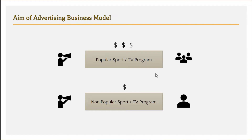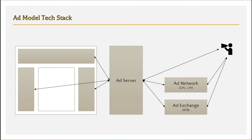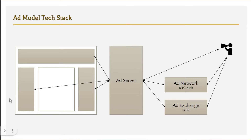Let's try to understand the tech stack we need to have for this to work, and at the end we'll understand the exact metrics to measure the success of this business model. There are three sources through which the website owner can get ads. One is directly contacting the advertiser to run ads on a particular slot. Another way is through an ad network, and the third way is through an ad exchange. Since there are multiple sources through which ads are coming in, we need a server to decide which ad should go where.